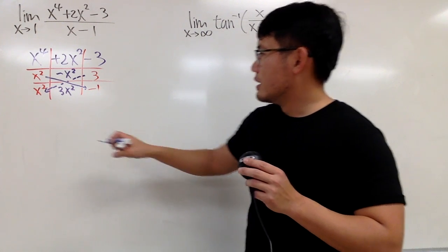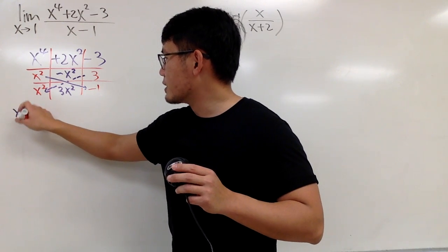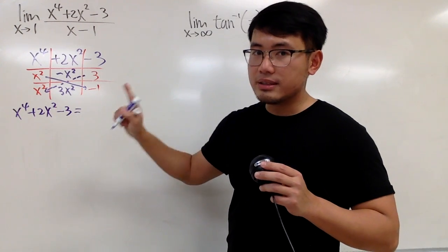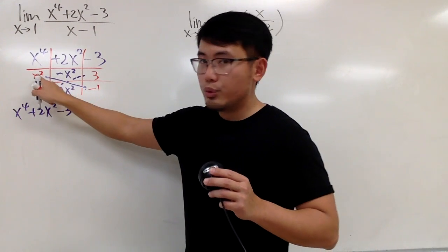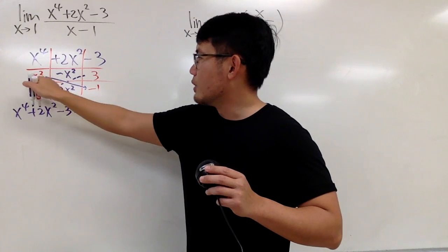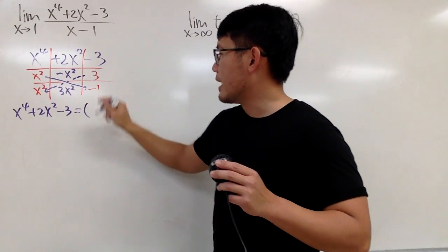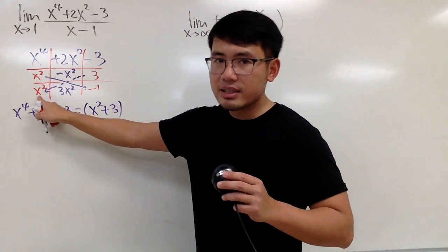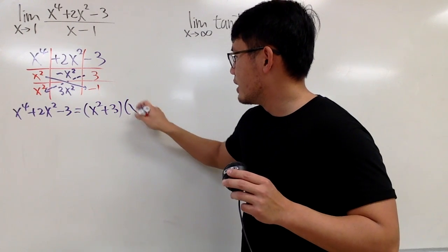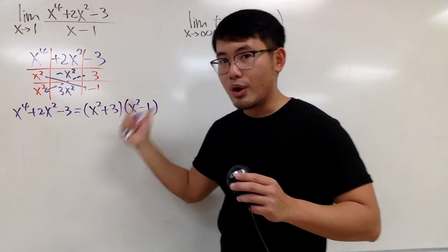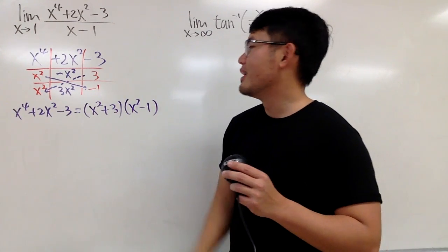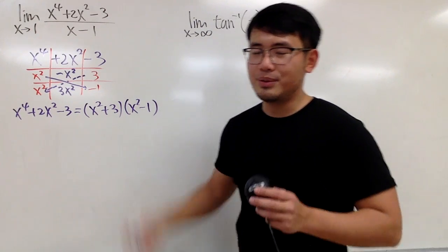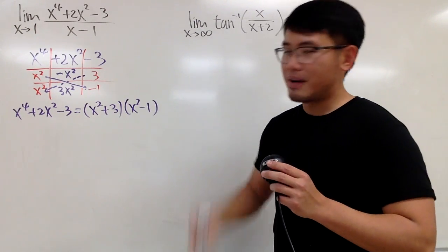Why? Because now I will have to take this right here, multiply with this, which is negative x squared, and then 3 times x squared. That will give me 3x squared. When you combine the terms in the middle, that's why you see, we also end up with the positive 2x squared. So, we know this is factorable in this fashion.